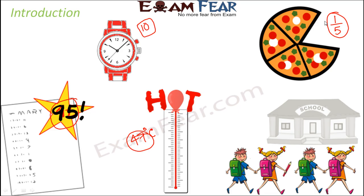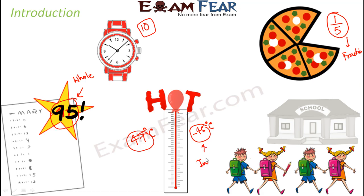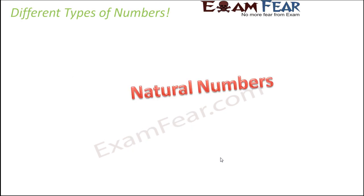To be more specific: 95 is a whole number, 10 is a whole number, 47 is a whole number. But one-fifth is not a whole number — it is a fraction, meaning one part out of five parts. And something like minus 45 degrees Celsius is an integer. So whole numbers, natural numbers, integers, and fractions are all different types of numbers.